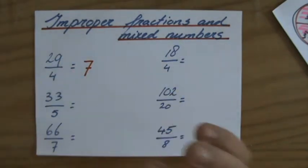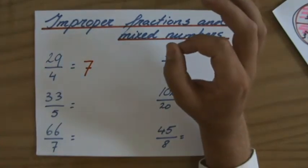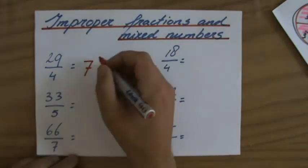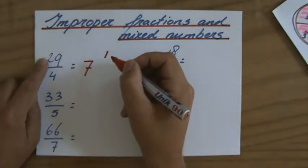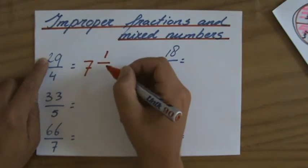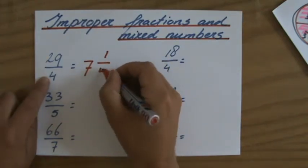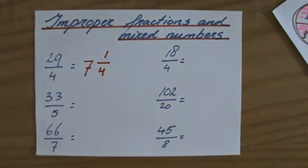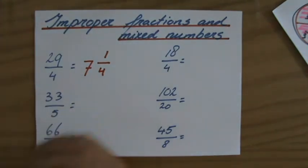Why? Because 4 times 7 is 28, not 29. So what is my remainder? My remainder is 1. 29 minus 28. So I still have 1, which I have to divide by 4. The mixed number that belongs to 29 over 4 is 7 and 1 over 4.